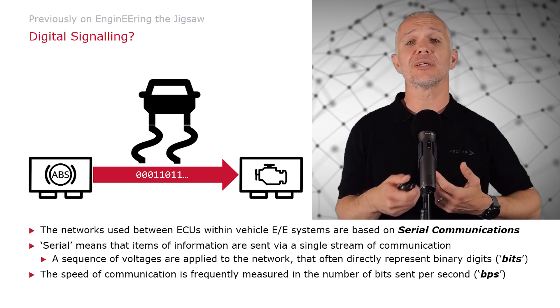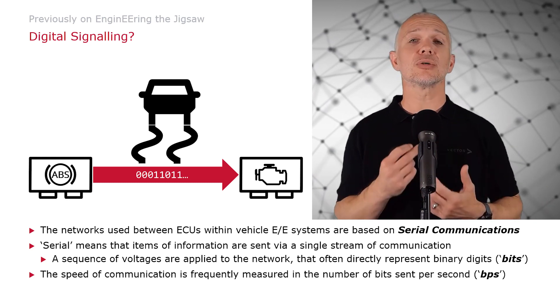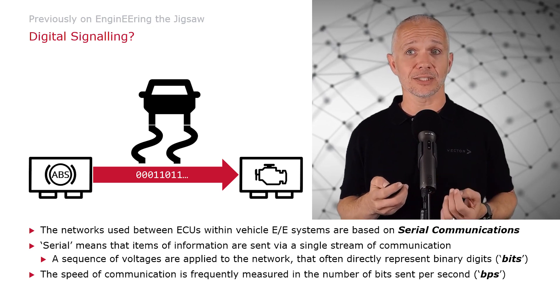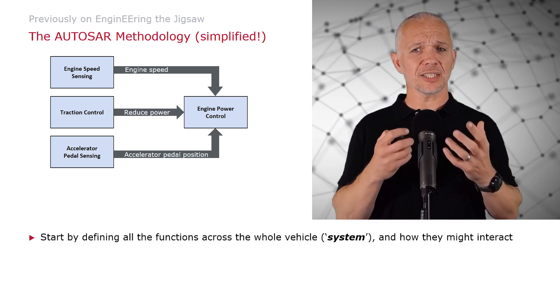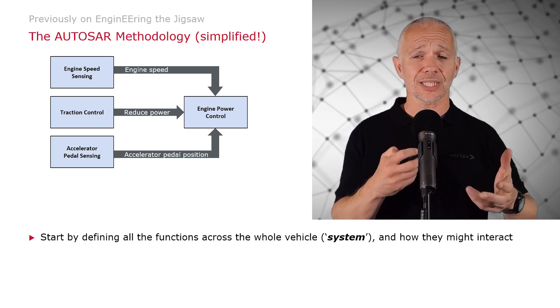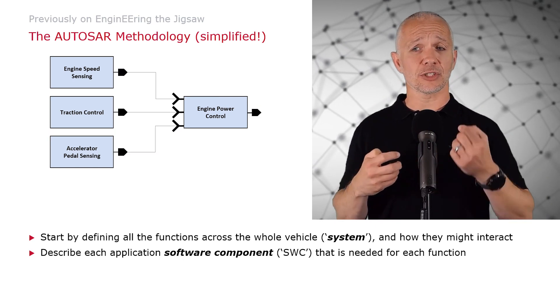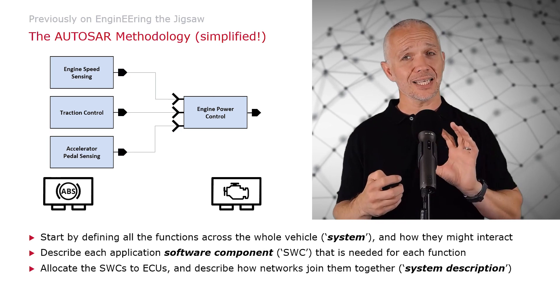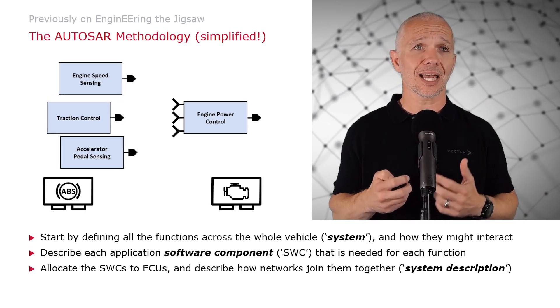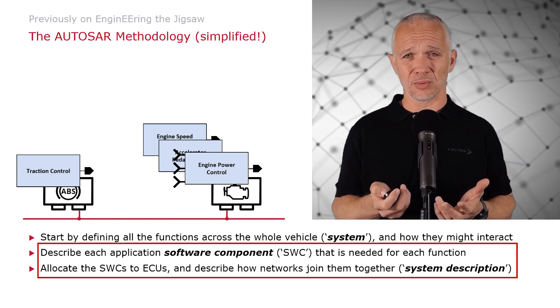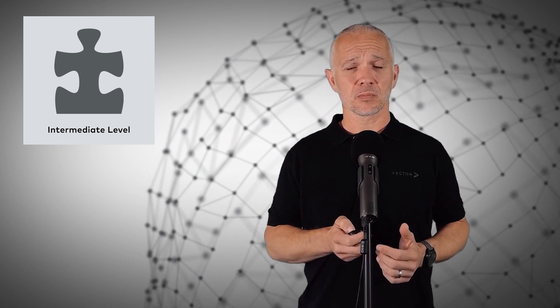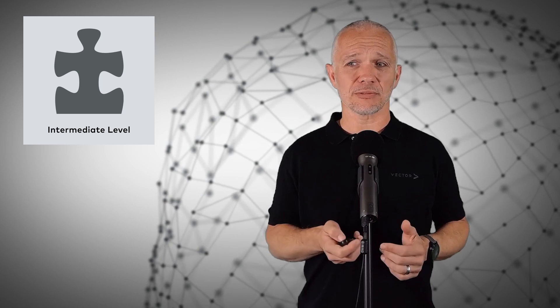Previously on Engineering the Jigsaw, we've talked about how ECUs make use of serial communications within vehicle EE systems to allow software on them to communicate within the system, making use of digital signalling. And we've talked about the AUTOSAR methodology in a simple way - how we think about our functions, how they might interact, describing application software components that are needed, allocating them to ECUs, and describing how networks join them together. And really, this is all quite simple conceptually. Surely it's slightly more difficult in practice. Let's go find out.